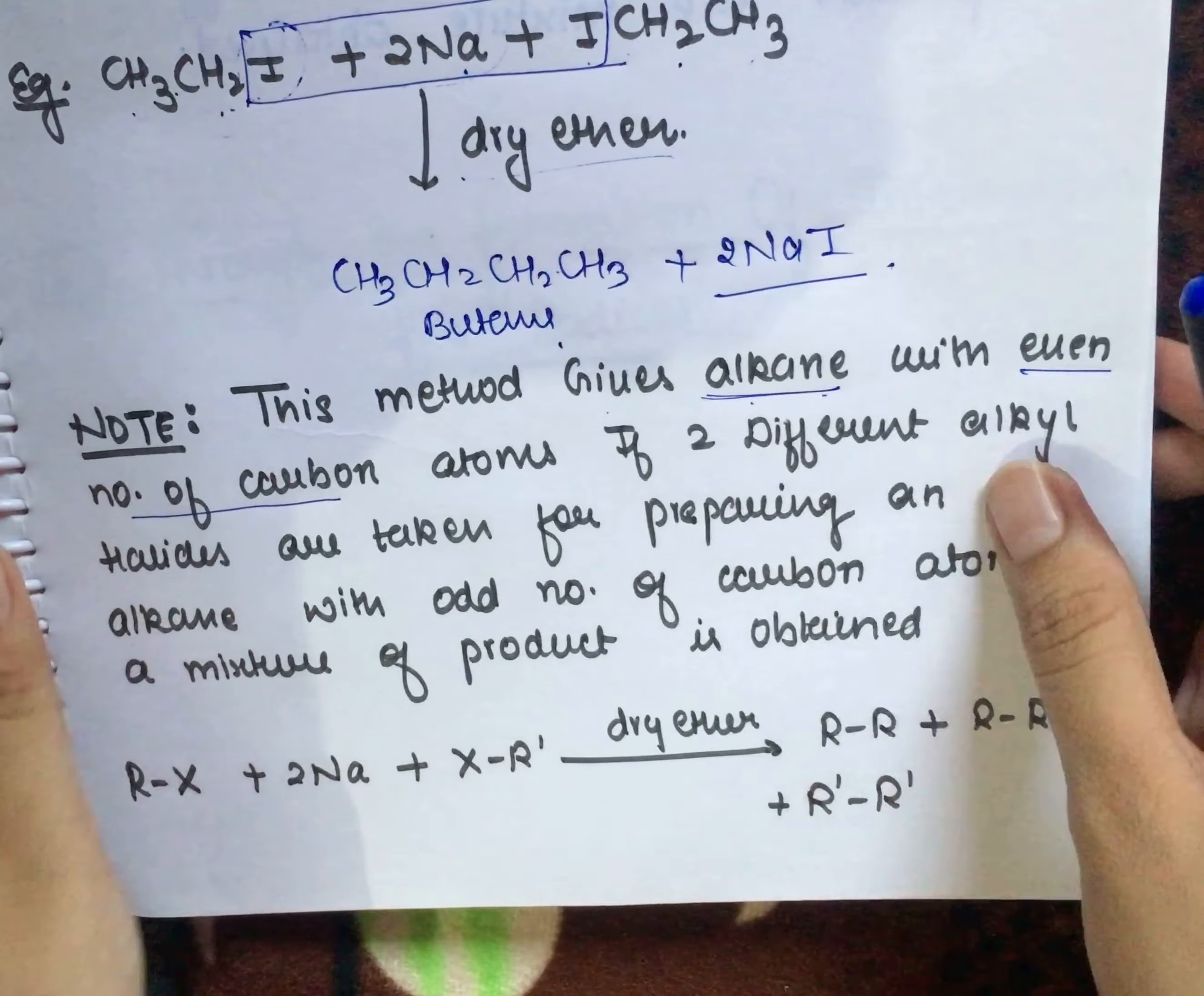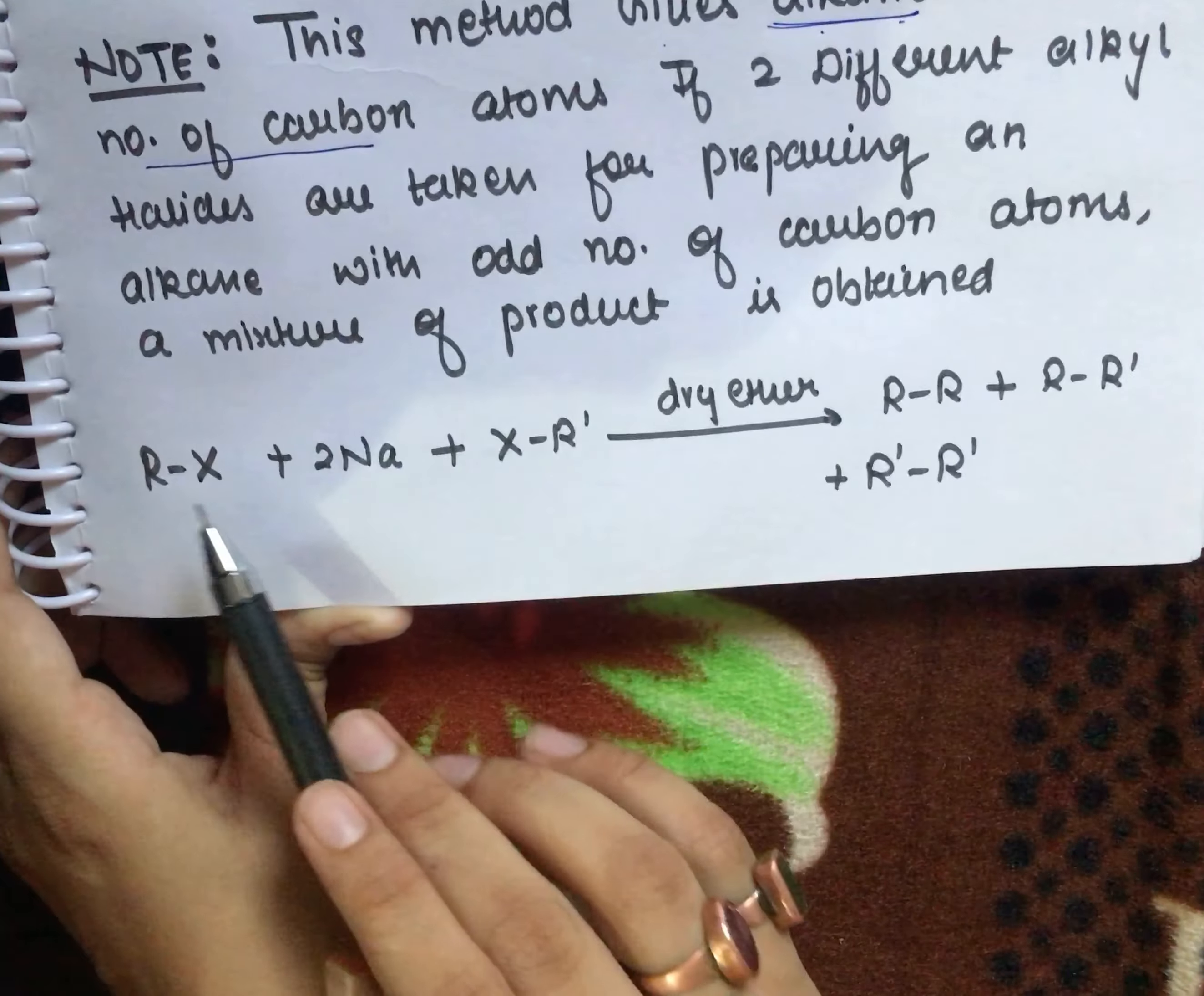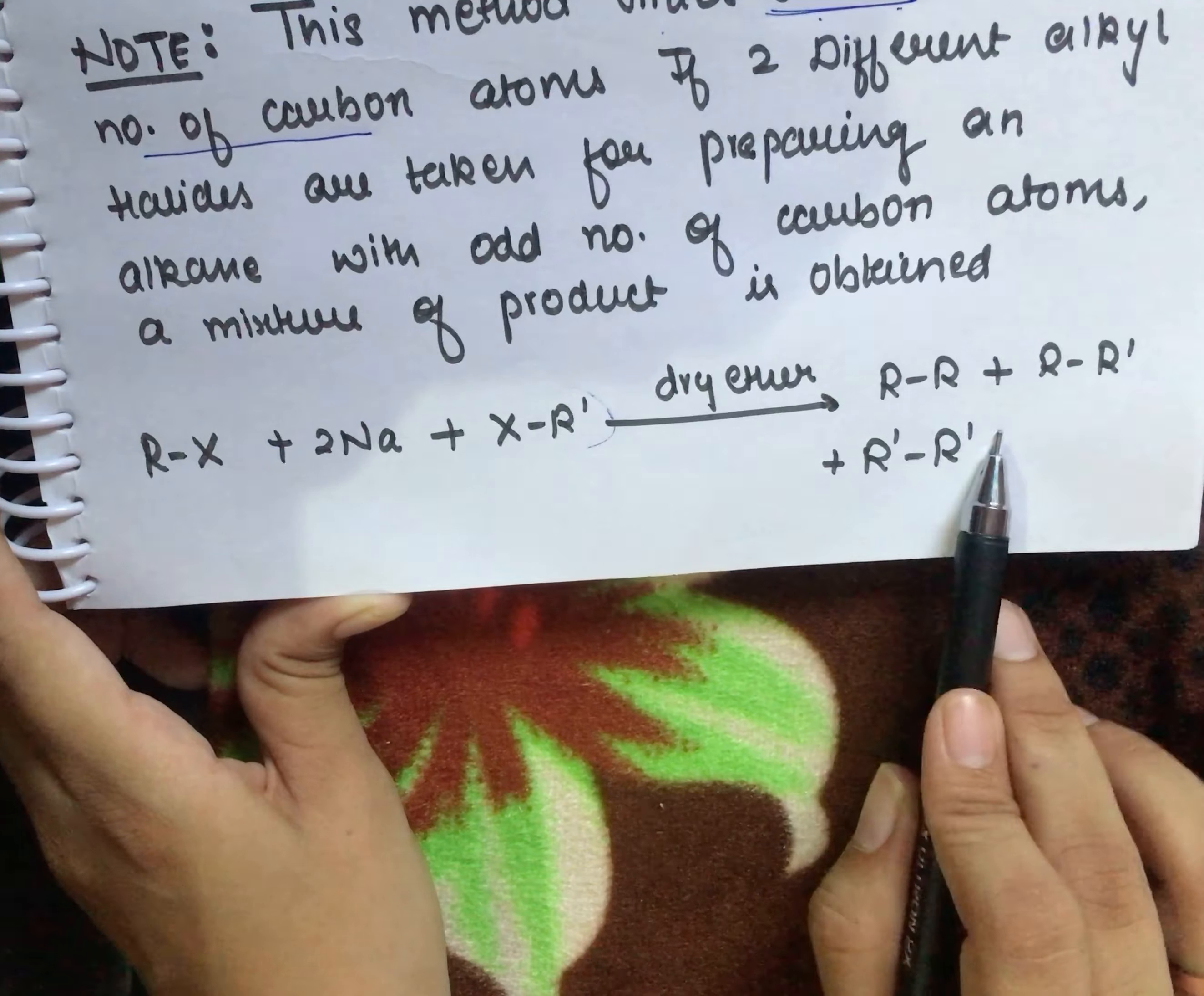If two different alkyl halides are taken for preparing an alkane with an odd number of carbon atoms, a mixture of products is obtained.